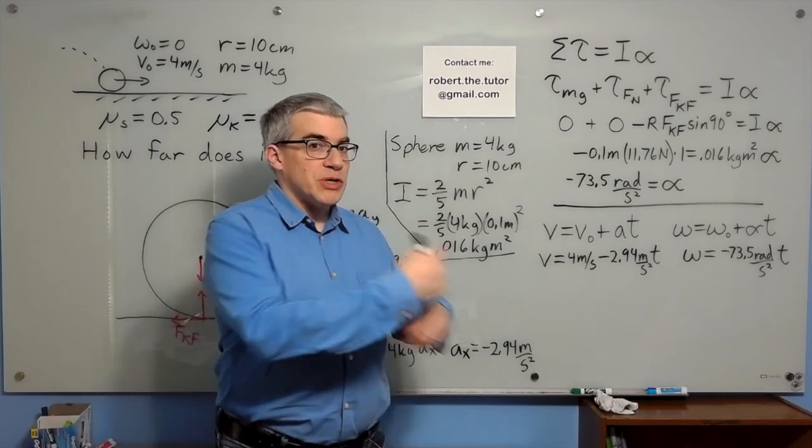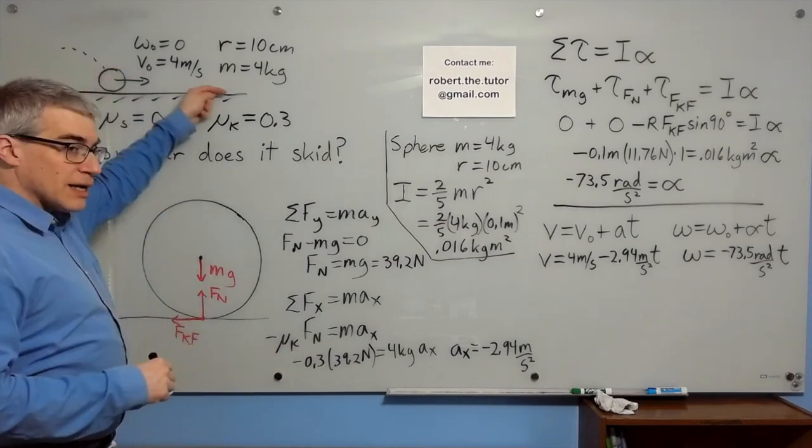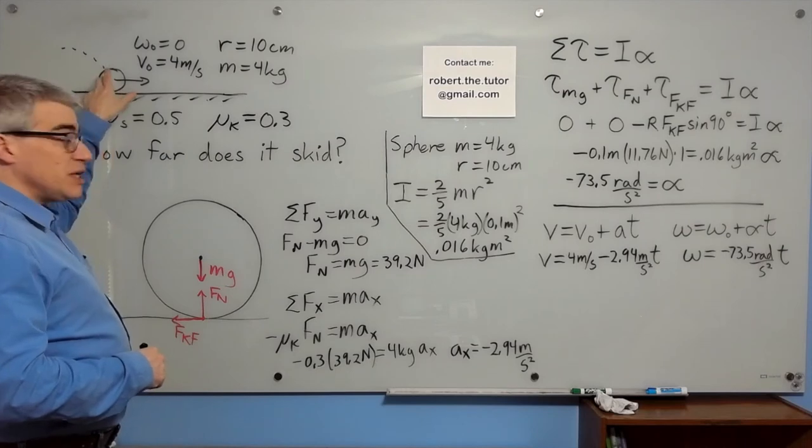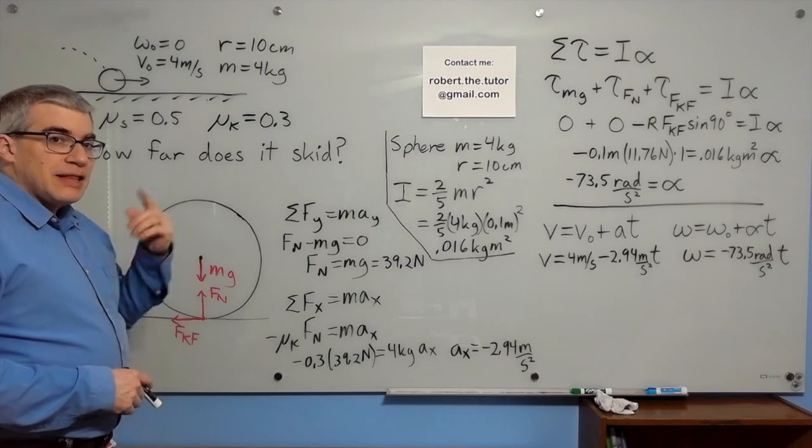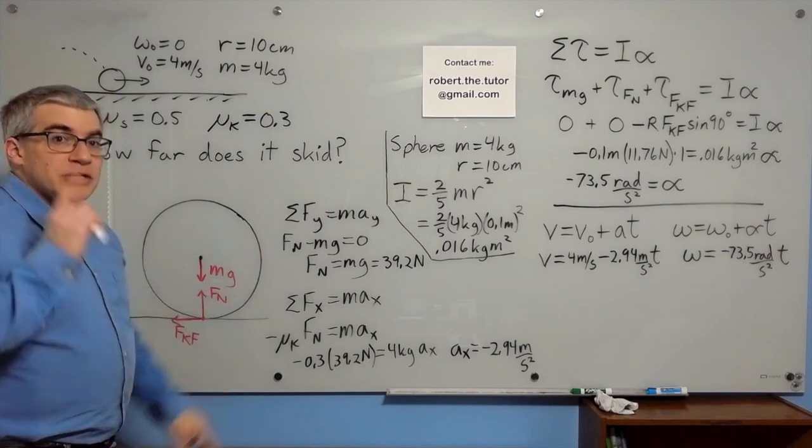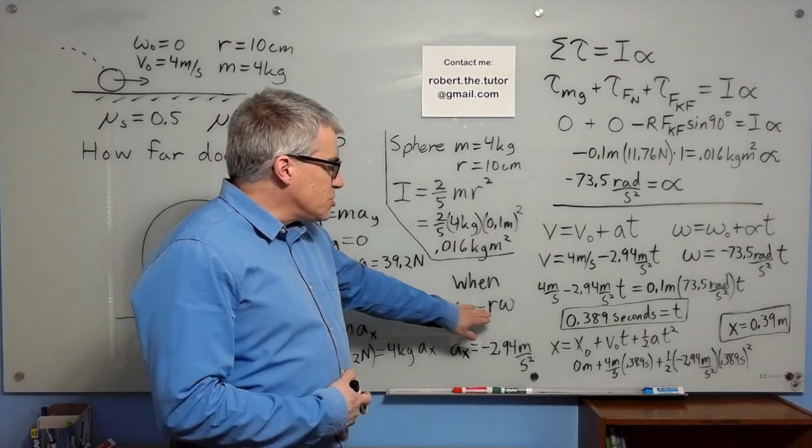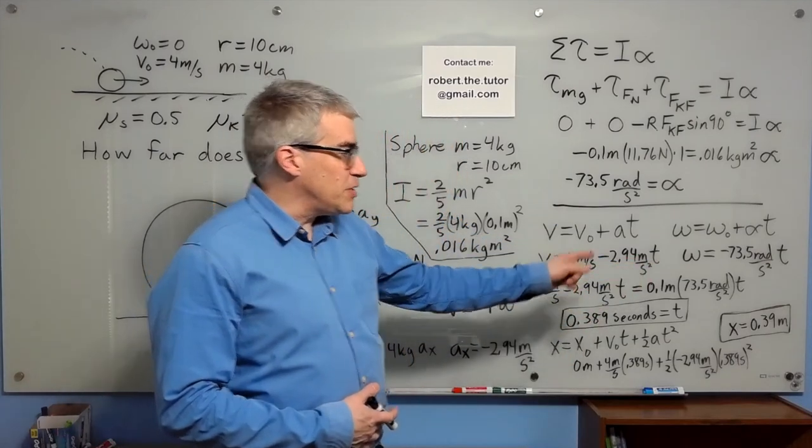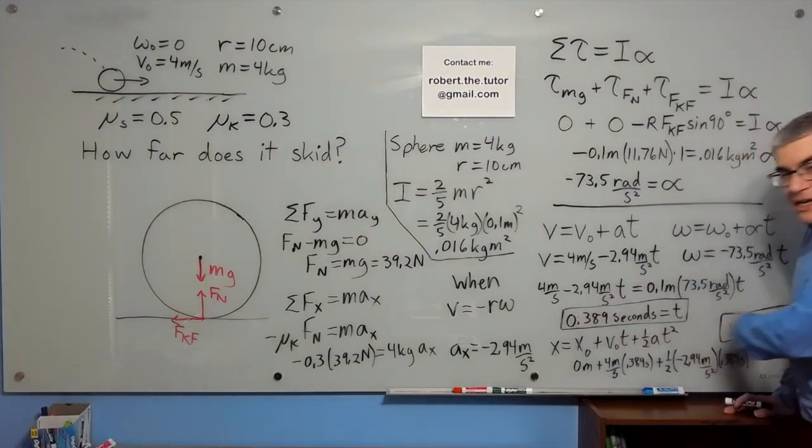Once you hit V equals R omega, then it will start rolling. There's one more sneakiness here, because I defined positive X to be that way, and I defined counterclockwise to be positive. So really, the way I defined things, V equals negative R omega. That's the condition for rolling without slipping, and that's when it stops skidding. So that's the time we want to know. Now, when V equals minus R omega, we have this expression equals minus 0.1 meter times this expression. When we solve that, we get the time is 0.389 seconds.